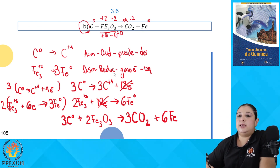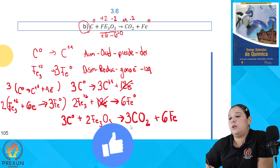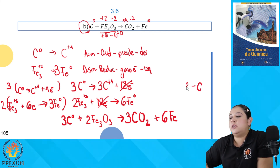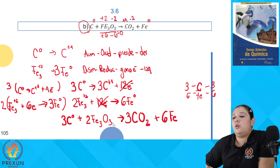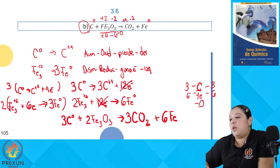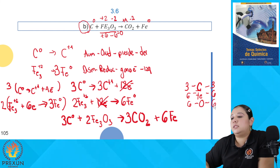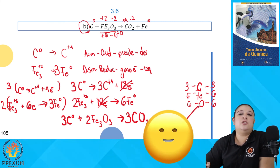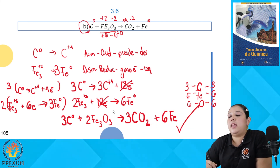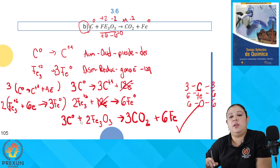Verificamos que la reacción esté balanceada: carbonos, 3 del lado de los reactivos y 3 del lado de los productos, balanceado. Hierro: 3×2 = 6 del lado de los reactivos y 6 del lado de los productos, balanceado. Oxígeno: 2×3 = 6 en los reactivos y 3×2 = 6 en los productos, balanceado. Todos los elementos están balanceados, cumpliendo con la ley que dice que la materia no se crea ni se destruye, solo se transforma.